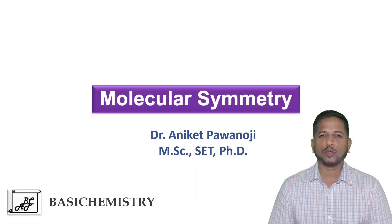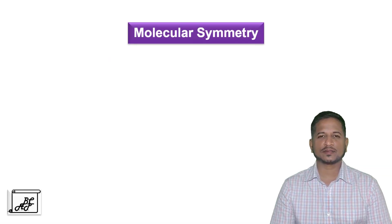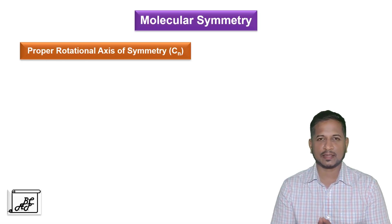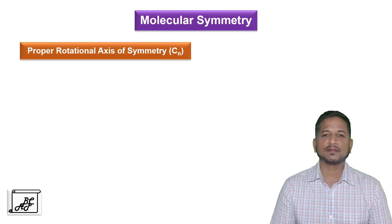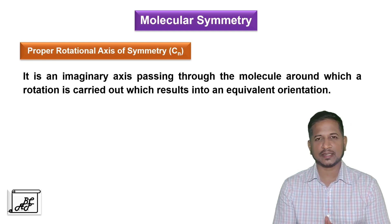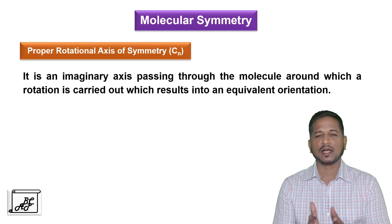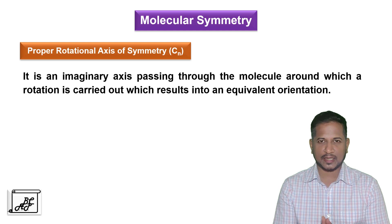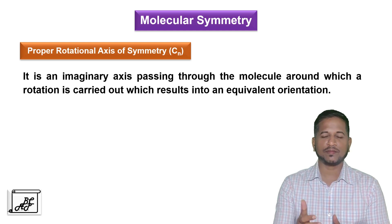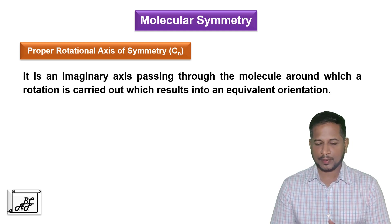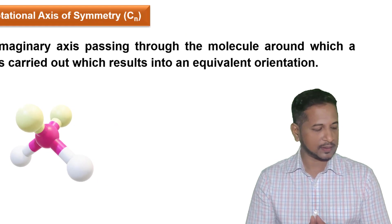The proper rotational axis of symmetry is represented by the symbol CN and is defined as an imaginary line or axis around which, if a rotation is carried out, it results in an equivalent image. For example, dichloromethane.